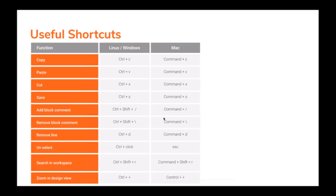There are some useful shortcuts we've listed. Most are standard shortcuts for copy, paste, cut, save, add/remove block comments, and remove line. In Integration Studio you can search in the workspace using Ctrl+Shift+R on Linux or Command+Shift+R on Mac, and use zoom functions with Ctrl+Plus.